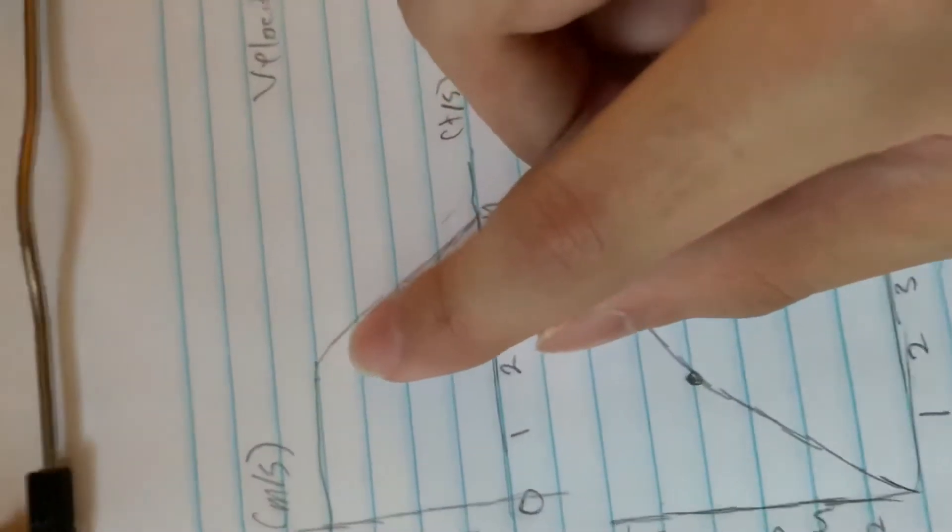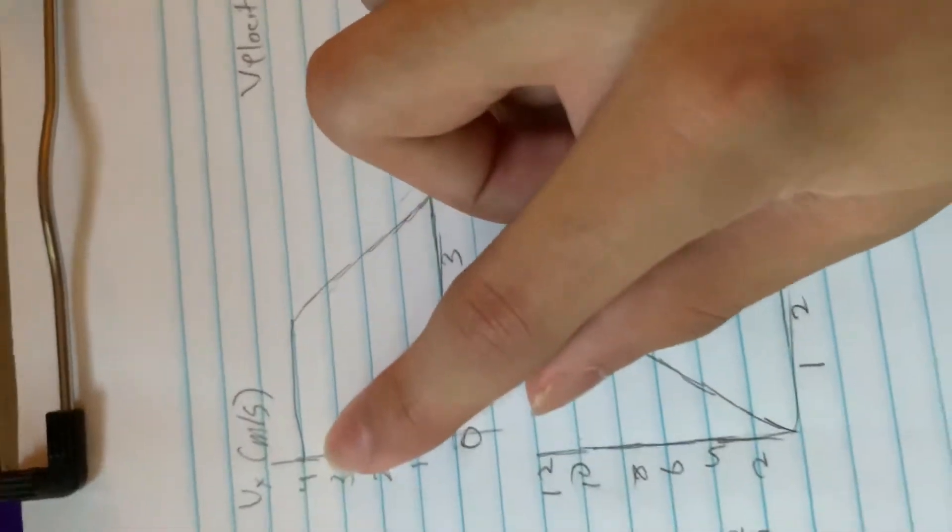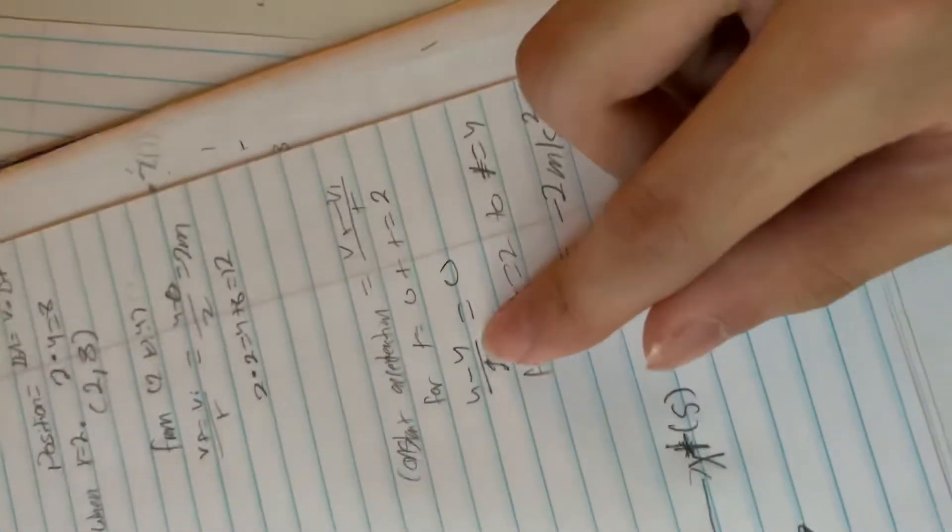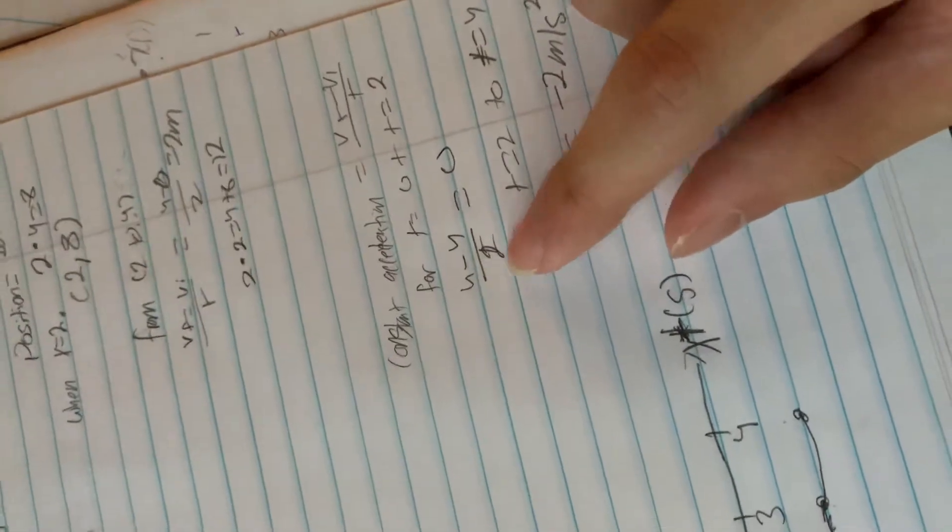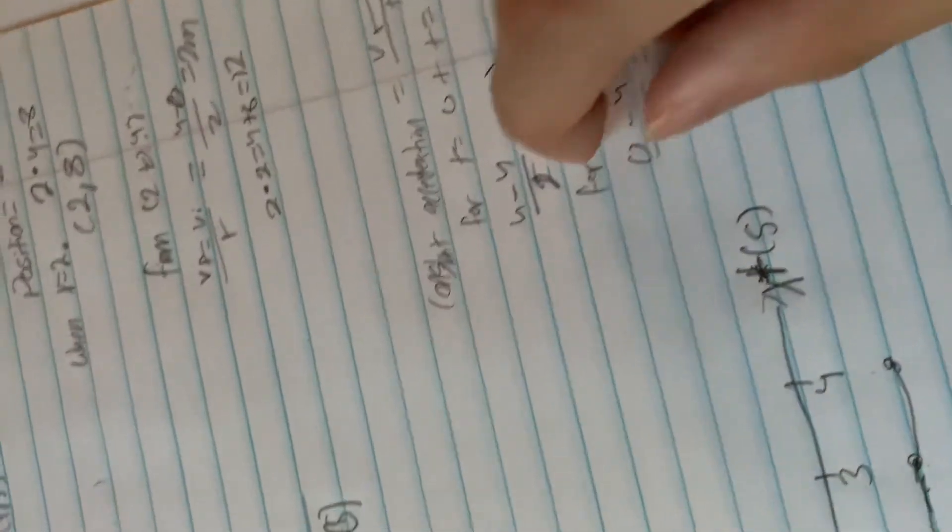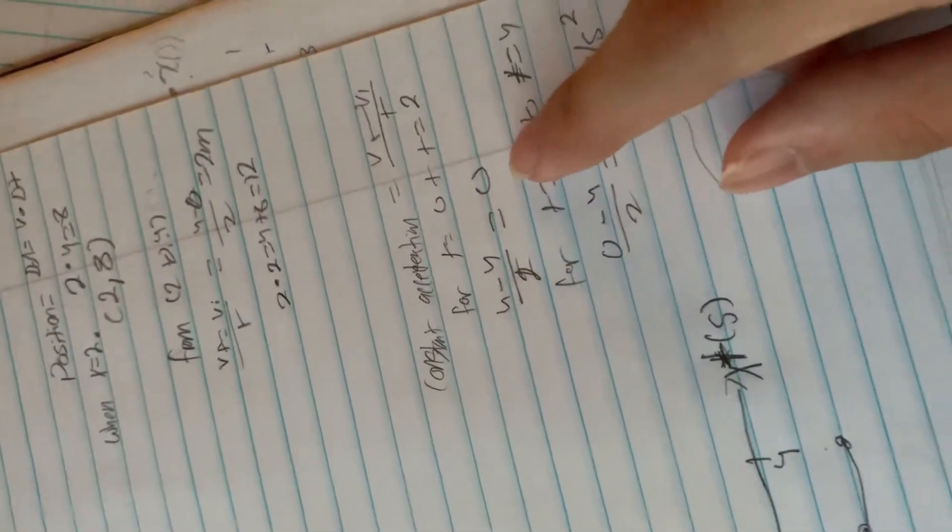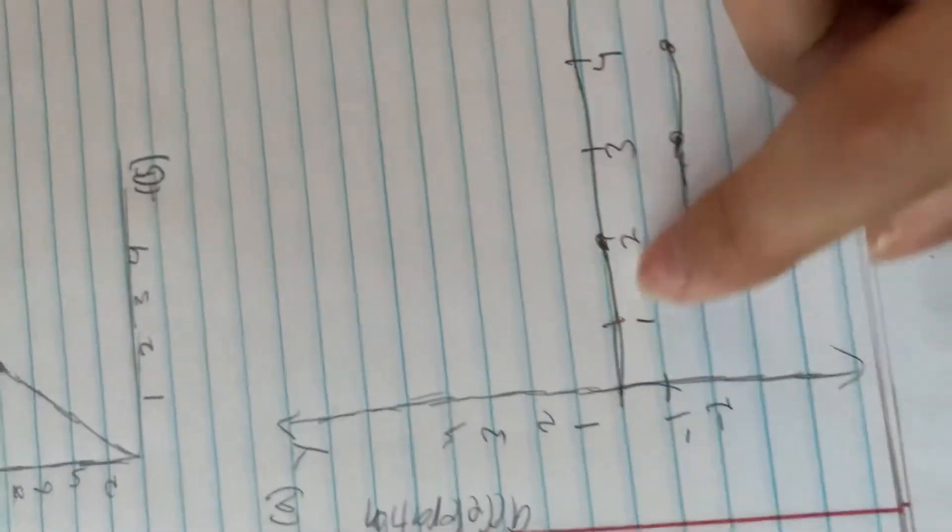as we can see, the final velocity was 4 and the initial velocity was 4. So it would simply just be 4 minus 4 over 2, because that's the change in seconds, the difference in time. So it would be 2 equals 0. As we can see, from 0 to 2, it would just be simply 0.